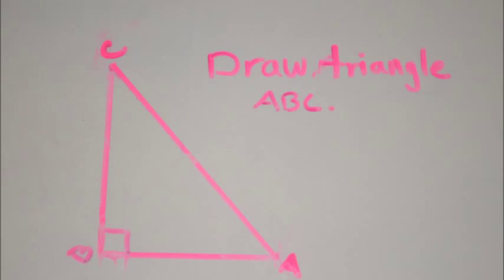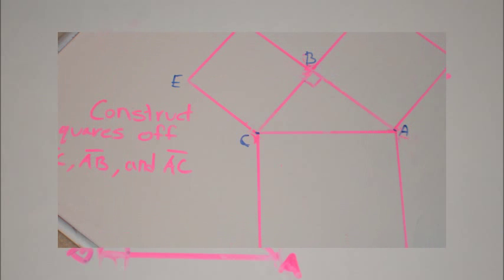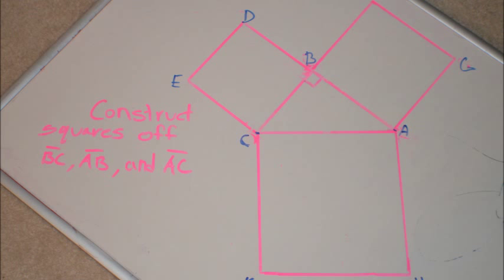Now what you want to do first is draw the right triangle. Let's label it A, B, C. And then what you want to do is extend the sides to make squares on all four sides: BC, AB, and AC.